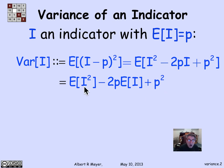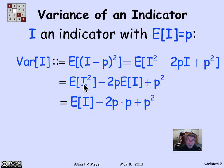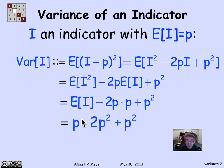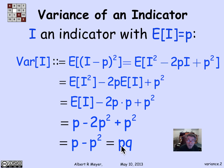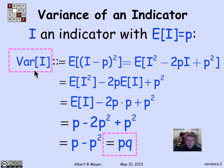Now, i squared is 0-1 valued, so i squared equals i, and the expectation of i is p. So the first term simplifies to expectation of i, which is p. The second term becomes minus 2p times p, and we have plus p squared. That gives p minus 2p squared plus p squared. The p squared terms cancel, leaving p minus p squared. Factoring out p gives p times (1 minus p), or pq — the standard formula for the variance of an indicator variable.